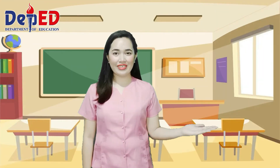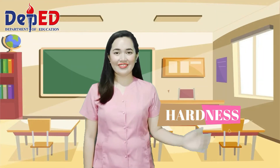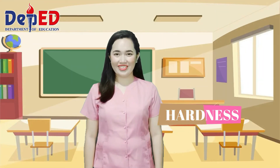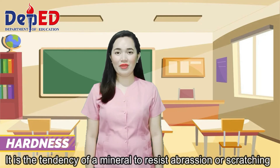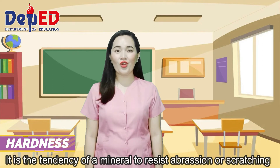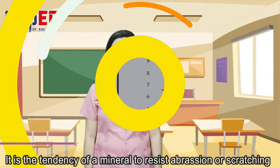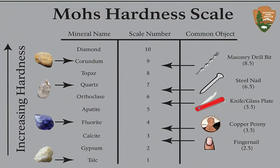The seventh property is hardness, which is the tendency of a mineral to resist abrasion or scratching. The Mohs scale of hardness shows the arrangement of minerals from softness to hardness, measured on a scale of 1 to 10.